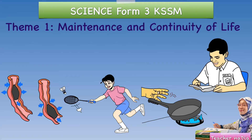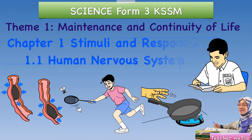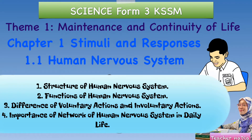Assalamualaikum and hi boys and girls. We are going to start our lesson with Theme 1, Maintenance and Continuity of Life, Chapter 1: Stimuli and Responses, Subtopic 1.1: Human Nervous System. In this subtopic, you are going to learn the structure of the human nervous system, the function of the human nervous system, the difference between voluntary action and involuntary action, and the importance of the network of the human nervous system in daily life.